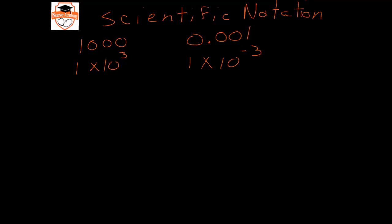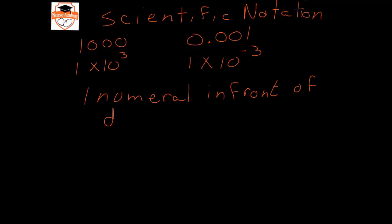An easy way to determine what the magnitude of this number is, is to simply count how many times you're going to move the decimal place. There's always one numeral in front of the decimal in proper scientific notation. The magnitude of the exponent is going to be how many times you move the decimal to get between its position in normal notation and its position in scientific notation.